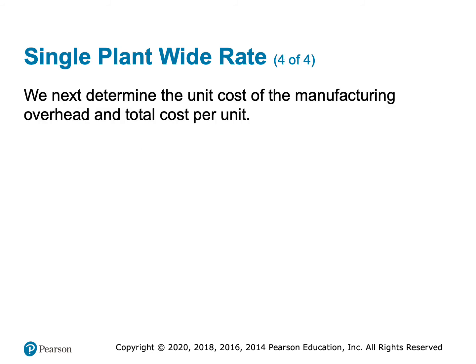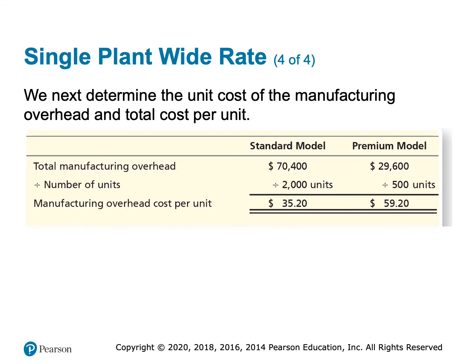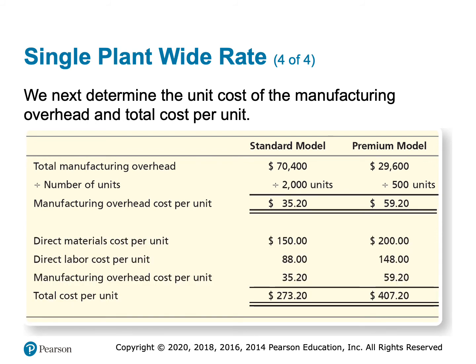Now we can determine the cost per unit for each model. The standard model receives $70,400 of overhead across 2,000 units, which is $35.20 each. The premium model receives $29,600 across 500 units, which is $59.20 each. Adding direct materials and direct labor, one unit of the standard model costs $270.32, and one unit of the premium model costs $407.20 under the single plant-wide rate method.